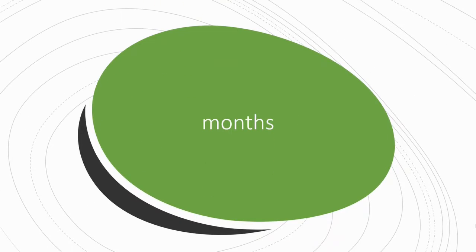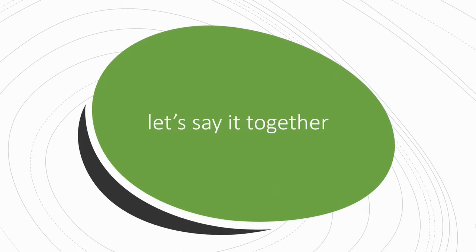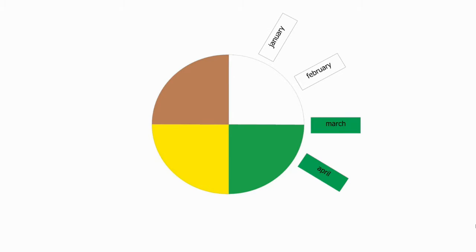Now let's repeat all the names of the months. Let's say it together: January, February, March, April, May.